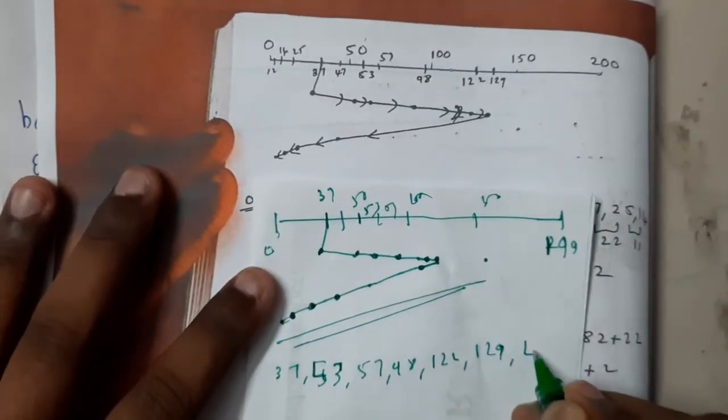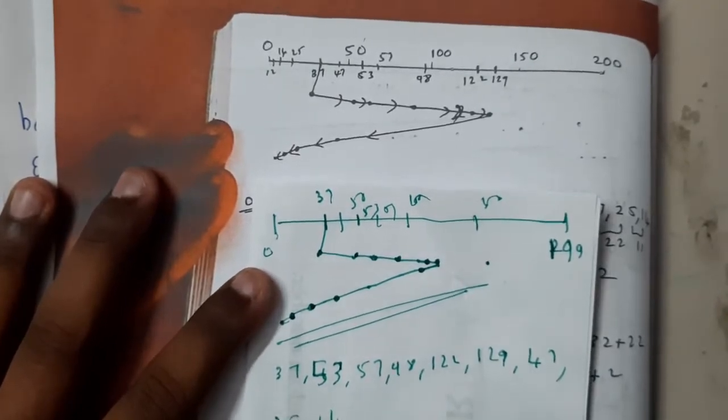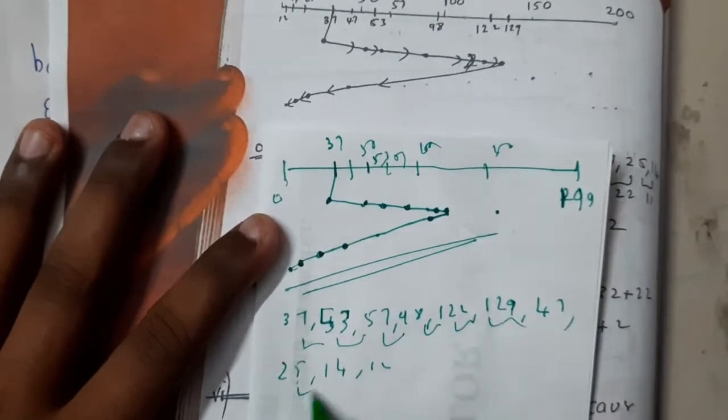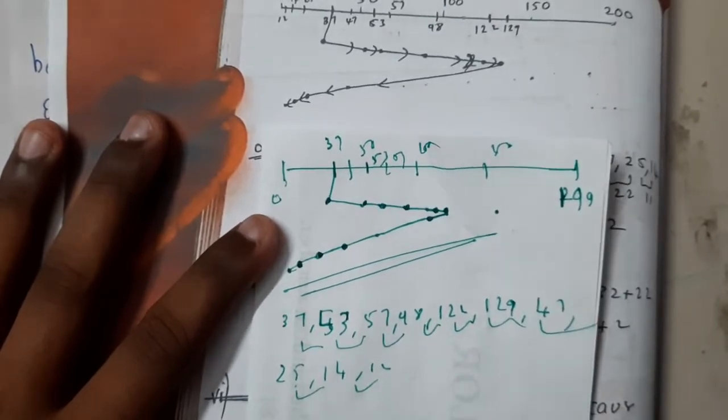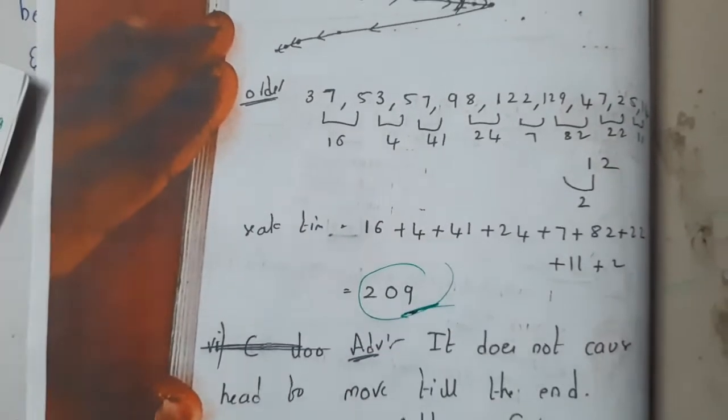You'll be calculating the differences. This is the order, and you'll be calculating the differences as usual. You'll be getting a particular seek time. Here we got 209. This is the seek time.